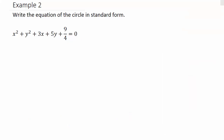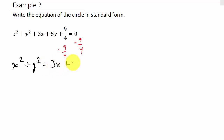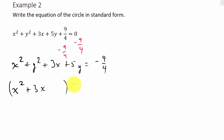Now let's look at the second example. We move the 9/4 constant to the other side, giving x² + y² + 3x + 5y = −9/4. Then we group the x and y terms: (x² + 3x) + (y² + 5y) = −9/4, leaving space in each group for completing the square.